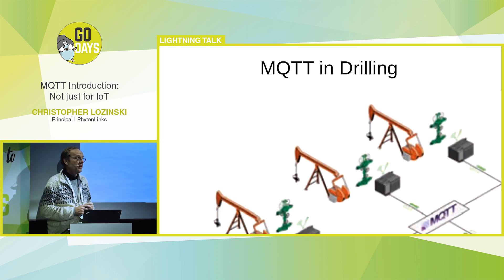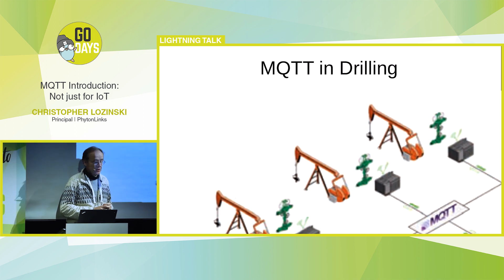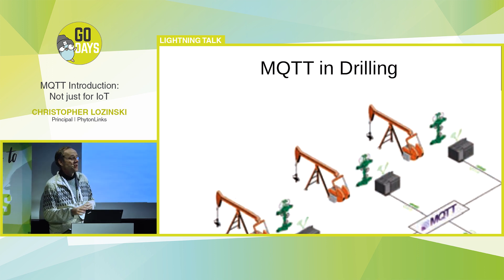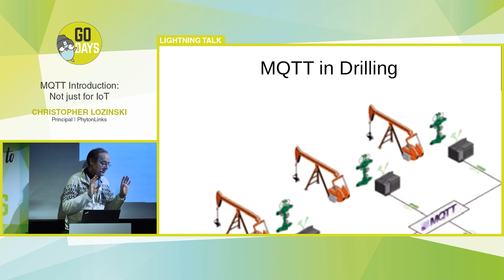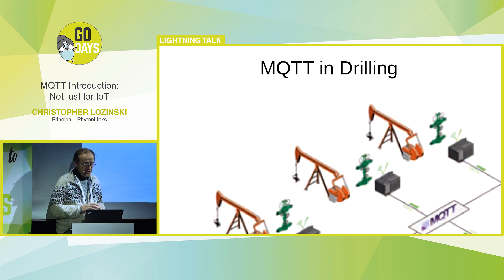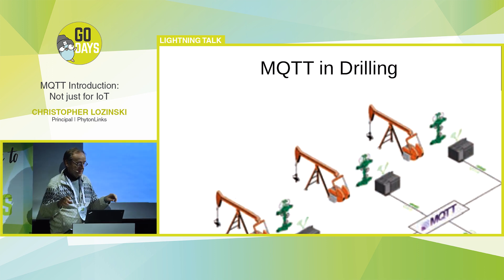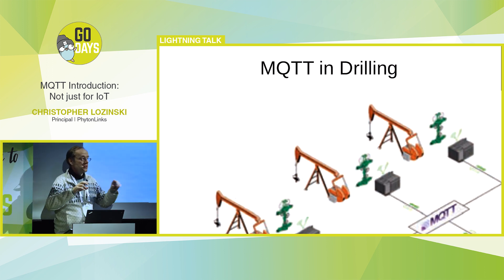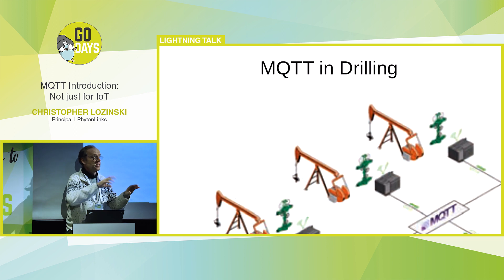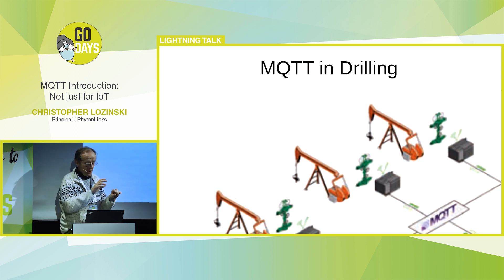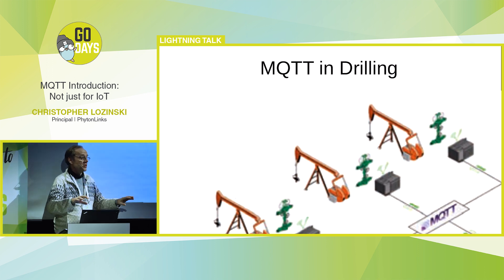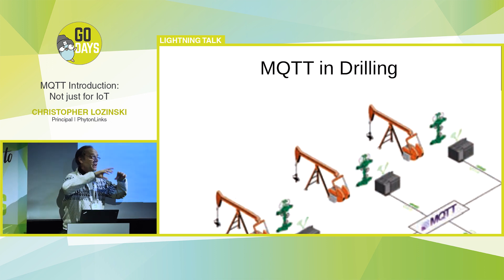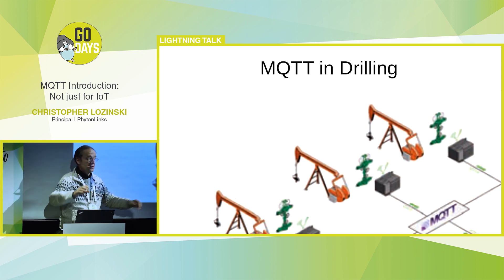Let's start with an example from the oil industry. You can imagine an oil field with multiple wells pumping, and there may be sensors. You can imagine a tree where there's a branch for every oil well, and there are a couple of sensors on every oil well — or maybe multiple fields — with a much larger tree covering a large geographical area.